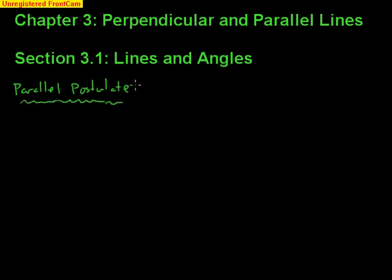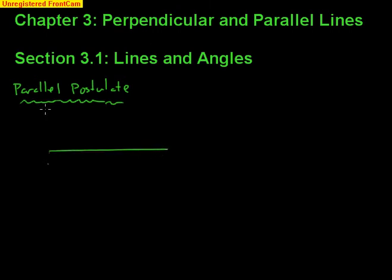Instead of writing it down, we're just going to talk about it and write down the key idea. Picture this: you have a line — call it line L — and somewhere in space you have a point called P. The question is, how many lines that are parallel to L can go through P? The answer comes out to be one.